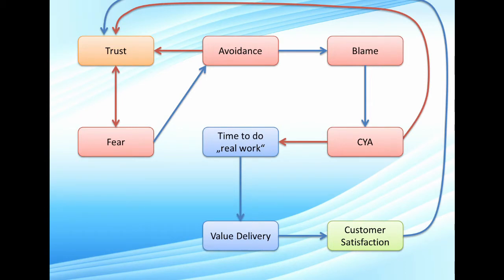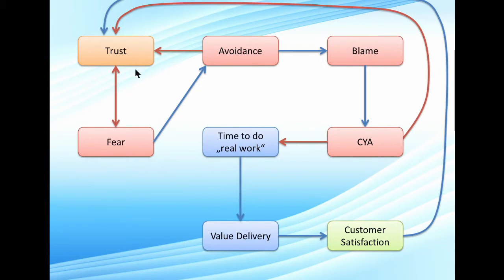Now that we've explored the basics of the model, I want to explore what I call feedback loops or reinforcement loops. The first one: how does trust affect trust? More trust means less fear; less trust means more fear. More fear leads to more avoidance, which leads to less trust. So low trust just tends to get worse. High trust means you don't need to be afraid and don't need to avoid, so you can have even more trust — a positive reinforcement loop.